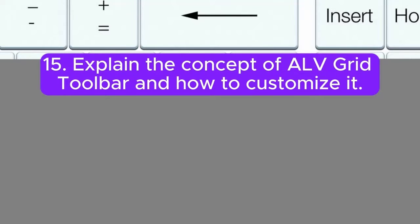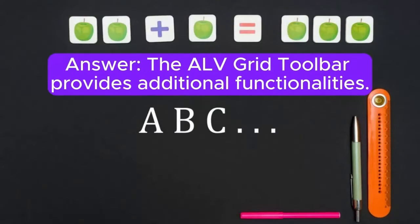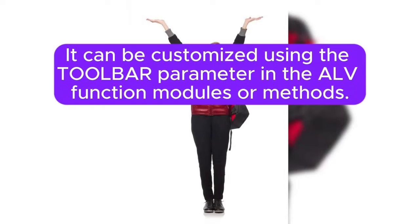Question 15: Explain the concept of ALV grid toolbar and how to customize it. Answer: The ALV grid toolbar provides additional functionalities. It can be customized using the toolbar parameter in the ALV function modules or methods.